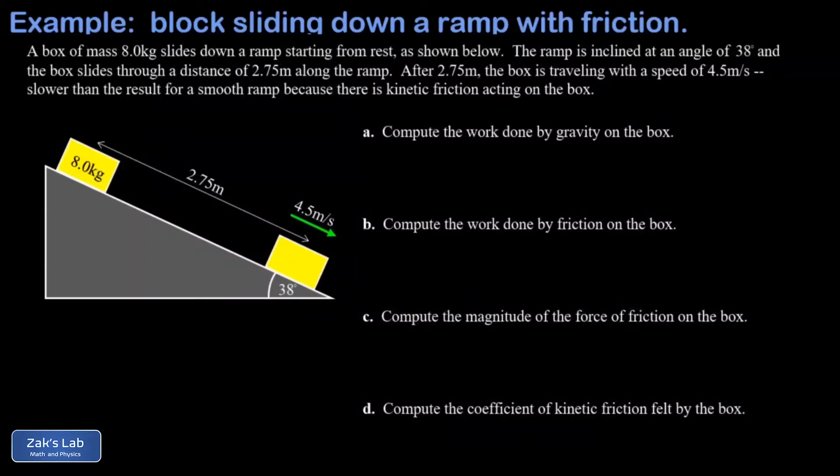In this problem we have a box sliding down a ramp and what we're given this time is the final speed after it slides through a known distance. We're told in the problem this final speed is slower than the result you would get for a smooth ramp because there's some kinetic friction acting, but we're not given the coefficient of kinetic friction. In fact, that's what we're going to calculate all the way down in part d.